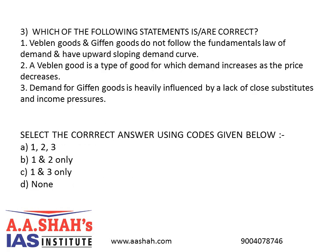Third question: which of the following statements is/are correct? 1. Veblen goods & Giffen goods do not follow the fundamental law of demand & have an upward sloping demand curve. 2. A Veblen good is a type of good for which demand increases as the price decreases. 3. Demand for Giffen goods is heavily influenced by a lack of close substitutes and income pressures.